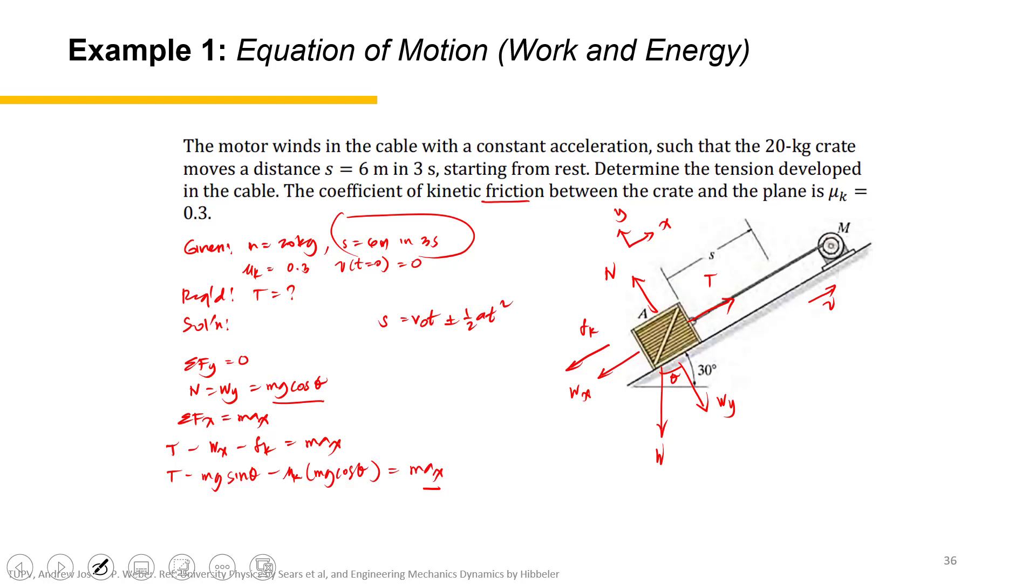It starts from rest, the distance is six meters in three seconds. So assuming positive sign: six equals one half a times three squared. The acceleration is four thirds meters per second squared, so we can finally solve for the tension.